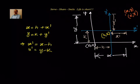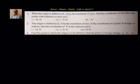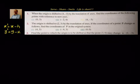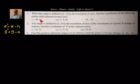Let us take a simple example. We know x-dash = x minus h and y-dash = y minus k, where (h,k) is the point to which the origin is shifted, (x,y) are the original coordinates, and (x-dash, y-dash) are the coordinates in the new system. The problem: when the origin is shifted to (4, -5) by translation of axes, find the coordinates of the given points with reference to the new axes.